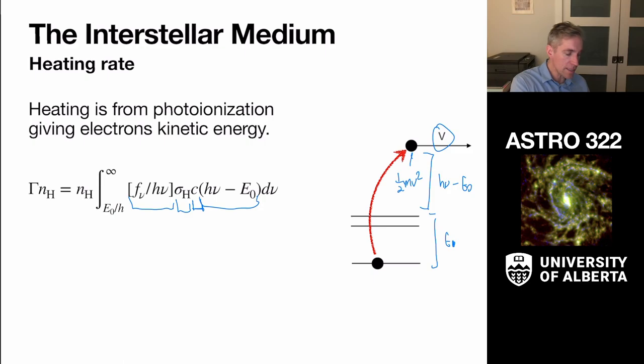And this C is converting it into basically the size of the volume that it happens, that the photons are sort of sweeping through. So this gives us a heating rate.